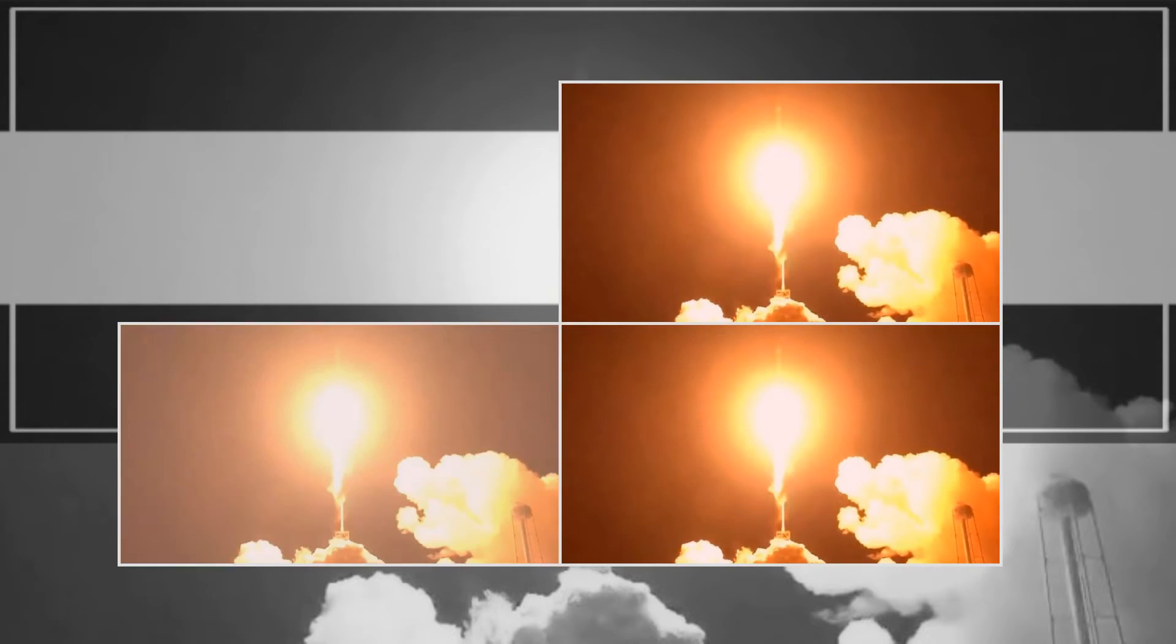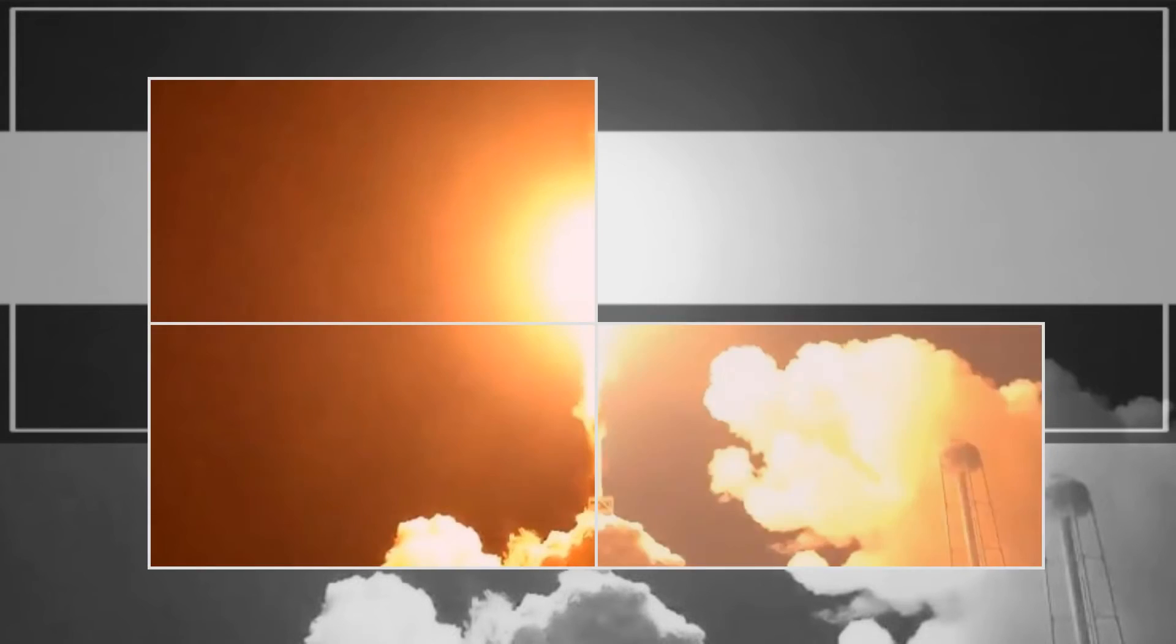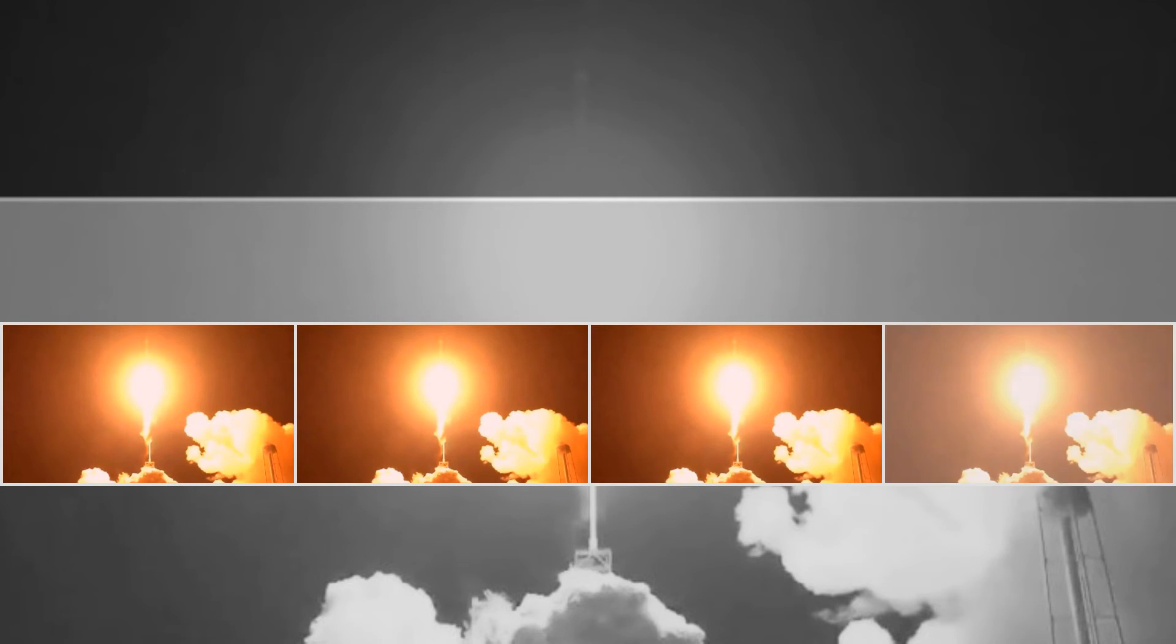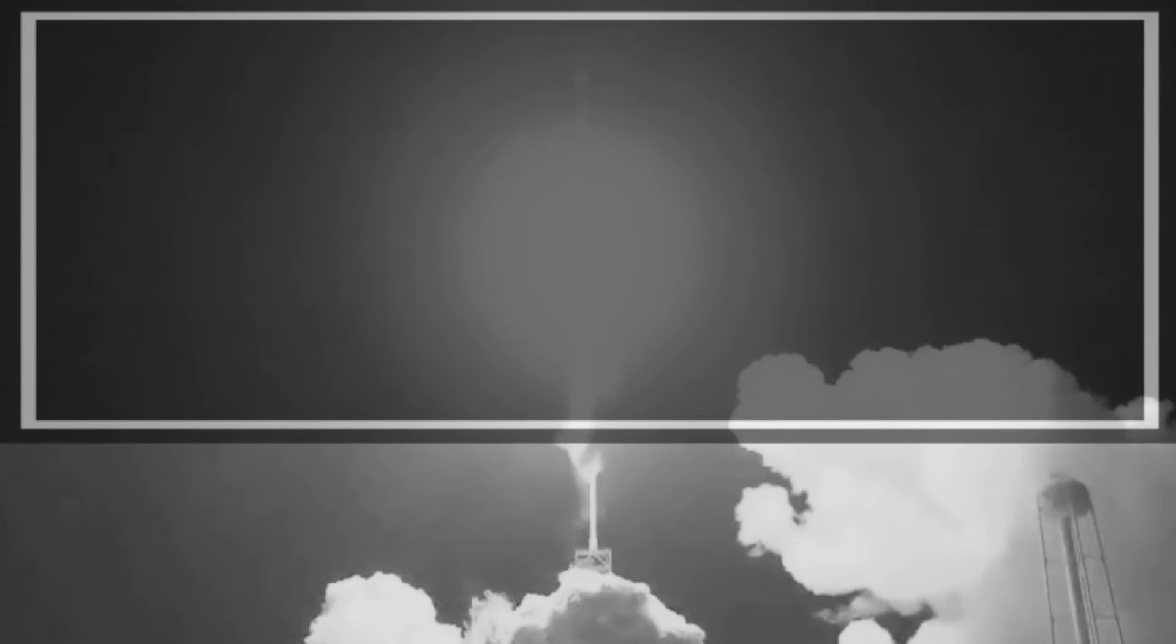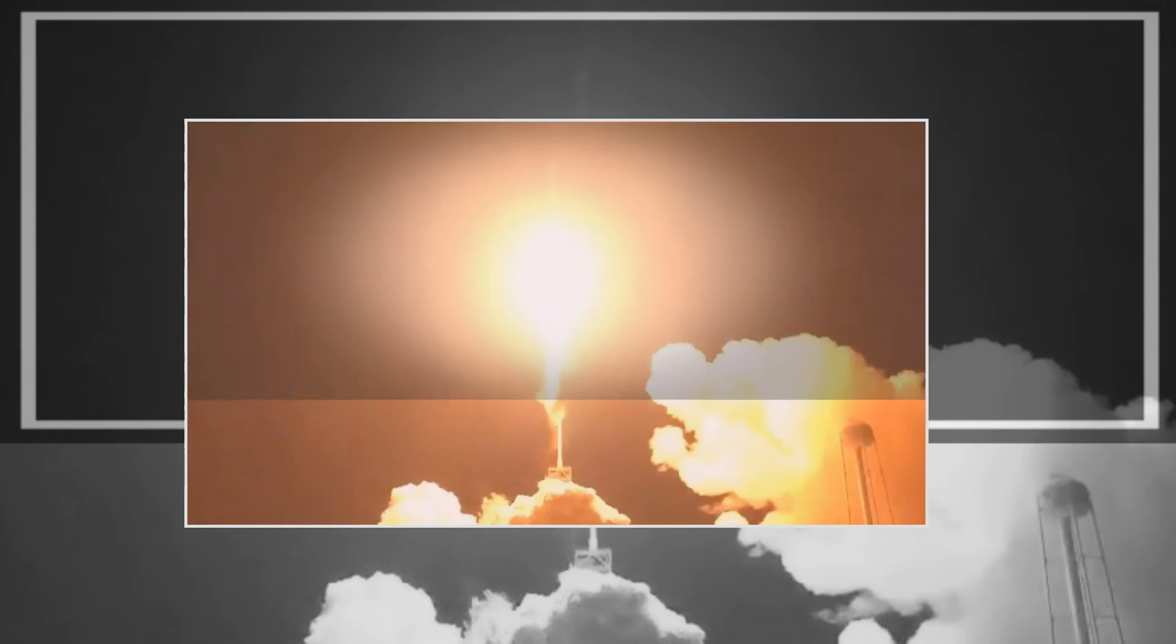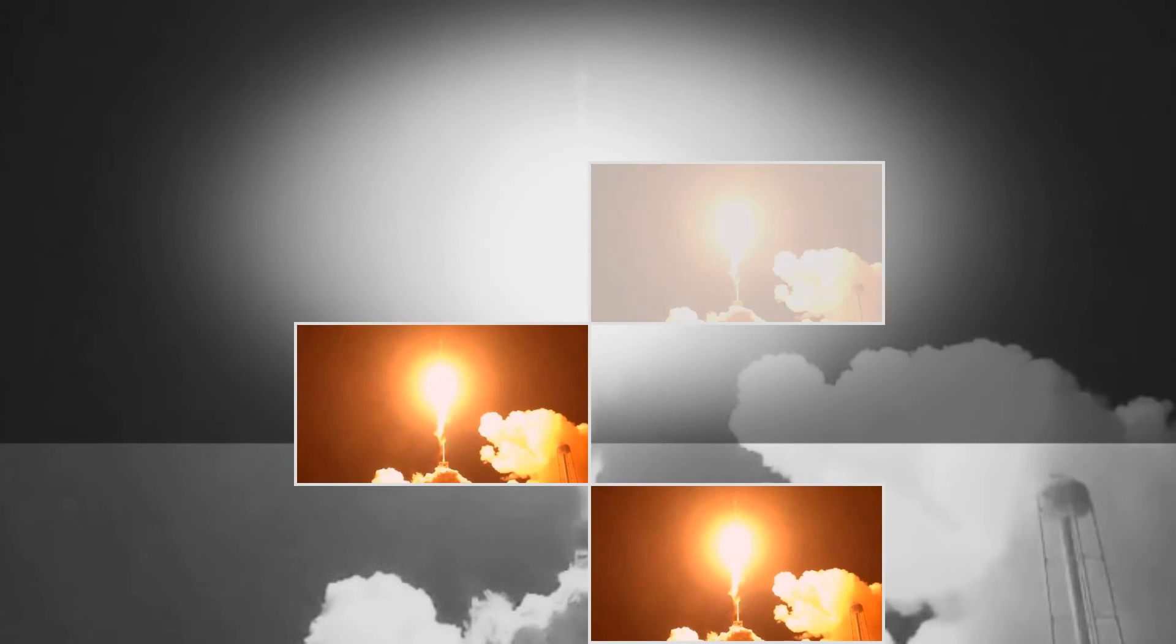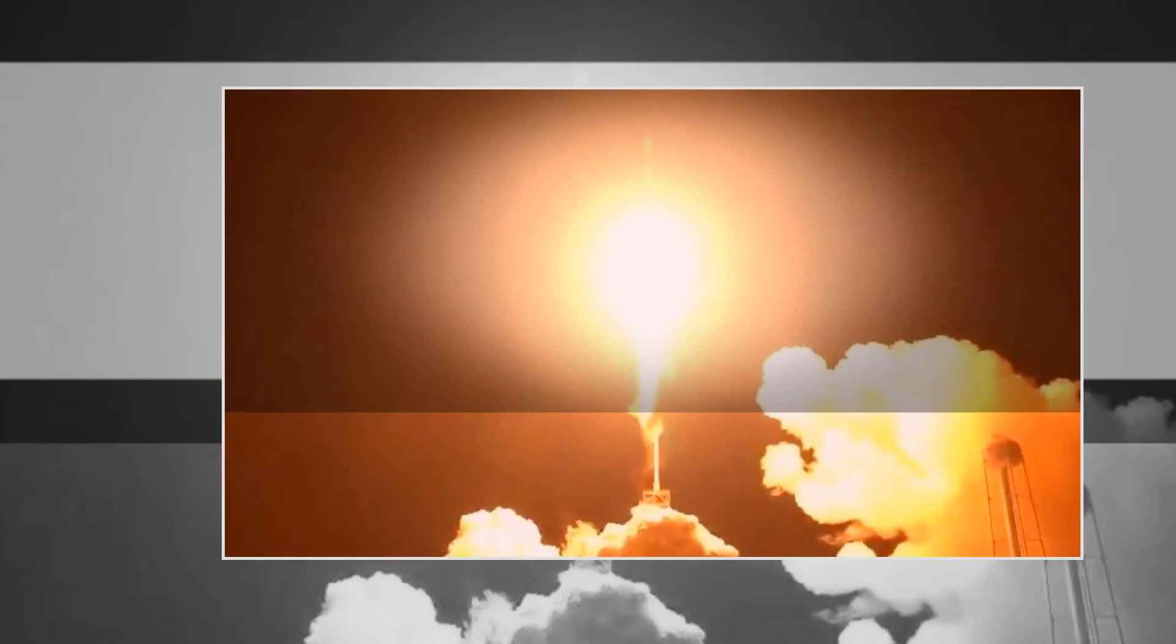SpaceX had intended to launch the six-ton satellite for Colorado-based Echo Star early Tuesday ET, late Monday PT, but high winds forced a delay. This time around, the launch opportunity opened at 1:35 AM ET Thursday, 10:35 PM PT today, but high altitude winds during the countdown led SpaceX to add another 25 minutes to the wait.